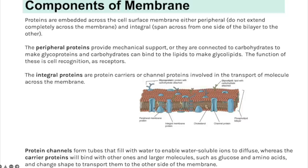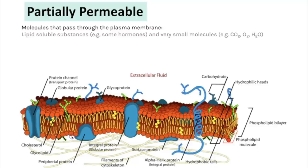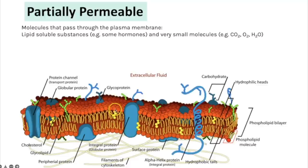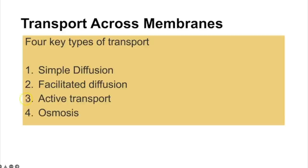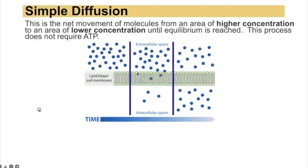Protein channels are tubes filled with water, enabling water-soluble ions to diffuse across the membrane. Carrier proteins allow large molecules such as glucose and amino acids to bind, causing a shape change that transports the molecule to the other side. The membrane is partially permeable: only lipid-soluble substances and very small molecules can pass by simple diffusion. Water-soluble, polar or large molecules must be transported by other means — facilitated diffusion, active transport, or osmosis for water.